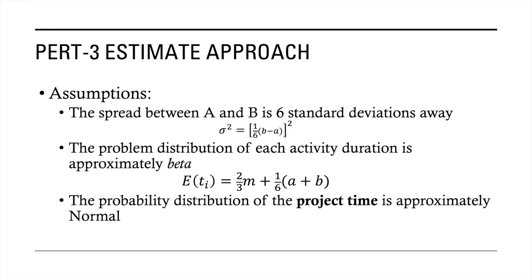The next assumption is that the distribution of each activity duration is approximately beta. You may not have encountered the beta distribution before — just understand that it exists. In this case, we need to assume that the activity duration's distribution is beta.